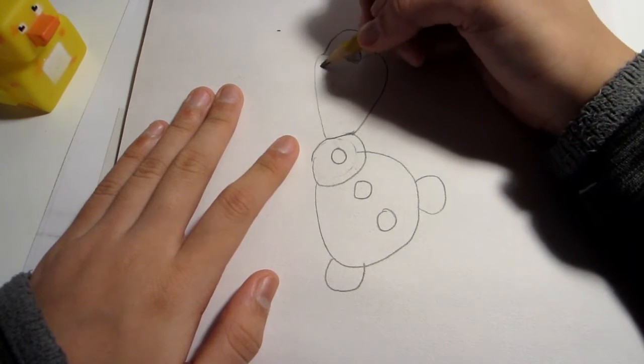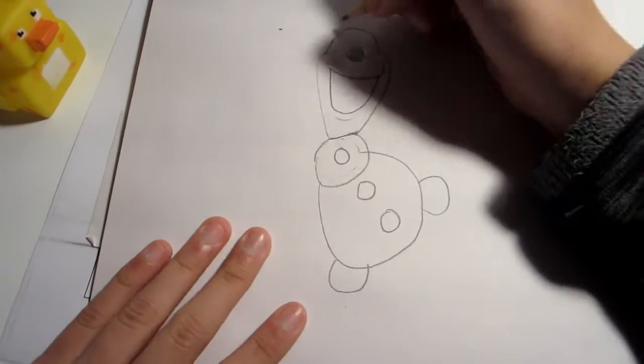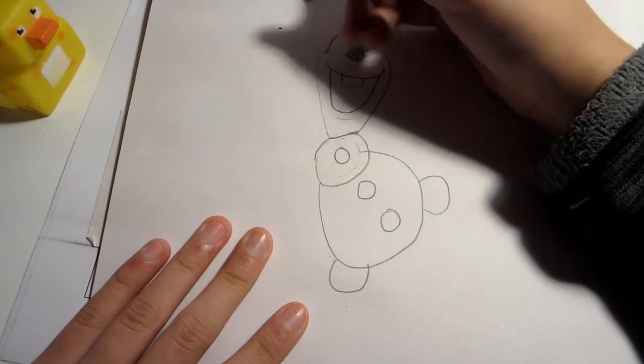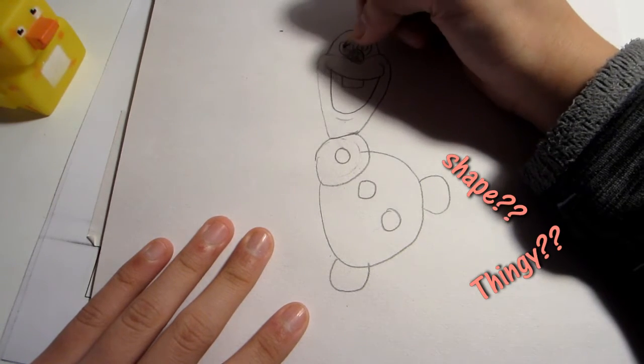Next, the mouth. So make a curve, like a kind of curve with points and stuff at the end. Shape, thingy, and then teeth.